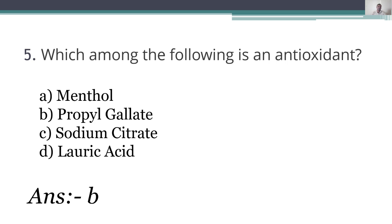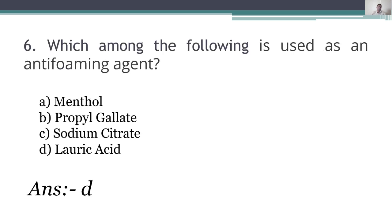B. Propyl gallate is used as an antioxidant. Sixth question: which among the following is used as an anti-foaming agent? D. Lauric acid is used as an anti-foaming agent.